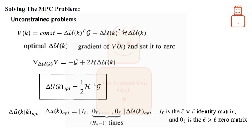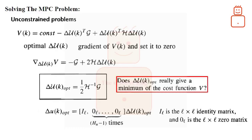At this step, we have computed the optimum control change sequence. However, there is a question that needs an answer. Does this control change sequence really give a minimum over cost function V of k?